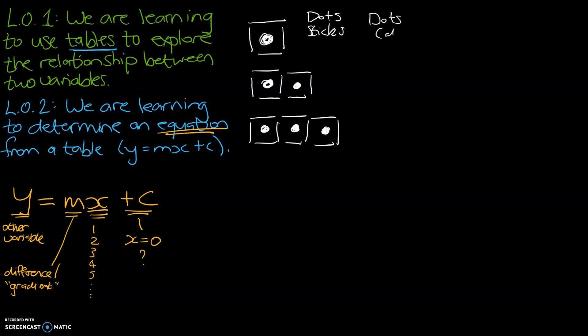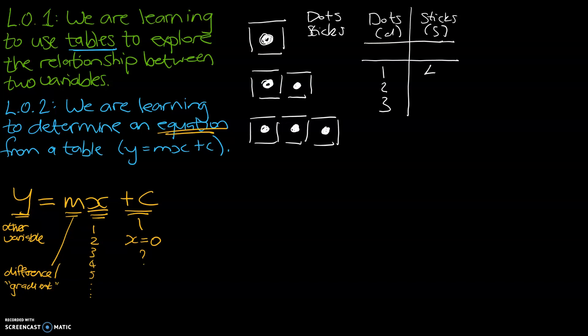Variable number one is the number of dots — we're going to call that d. And variable number two is the sticks — we're going to call that s. Let's draw a table. We're going to leave a gap to start off with, and I'll explain what that's used for in a bit. The number of dots: one, two, and three. Related to the first pattern, there were four sticks. For the pattern with two dots, counting up we get seven sticks.